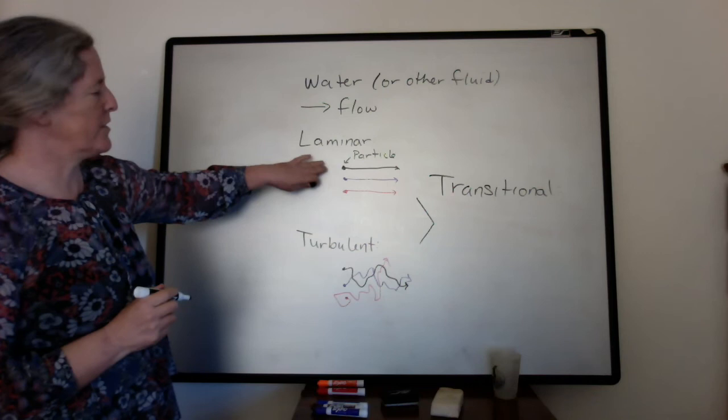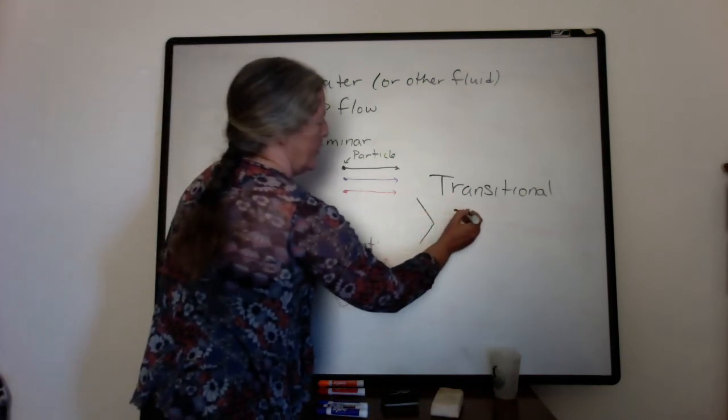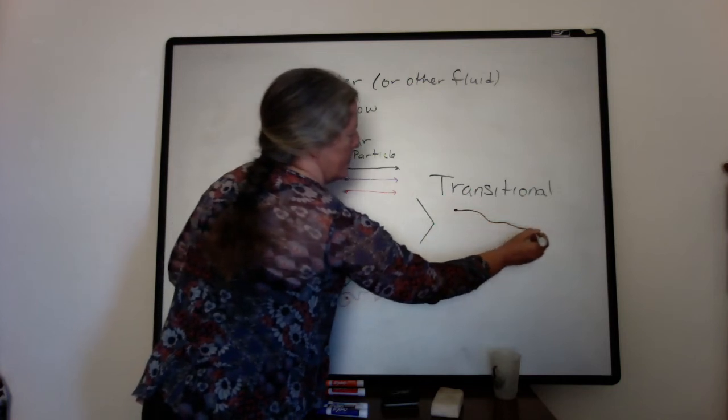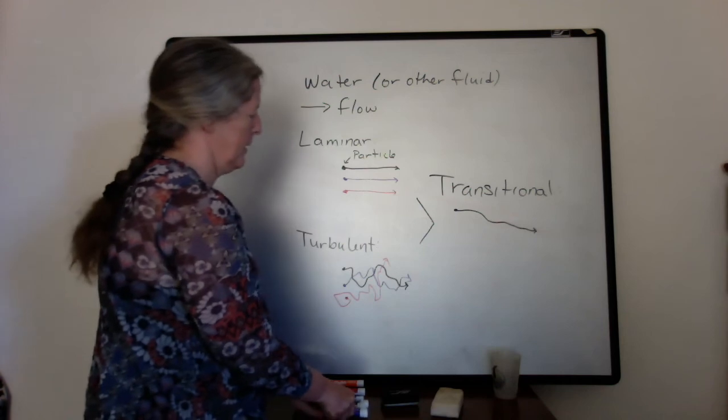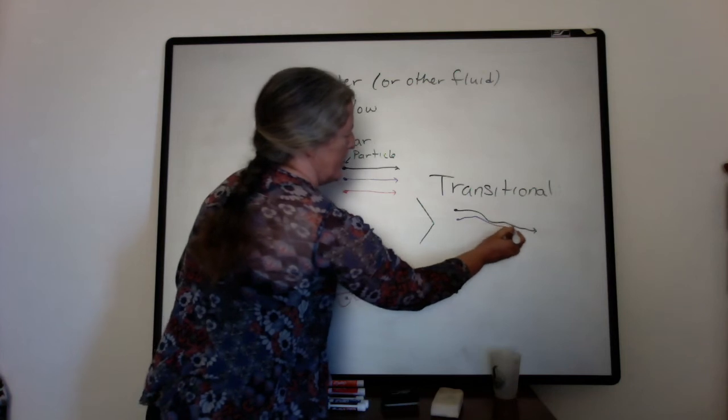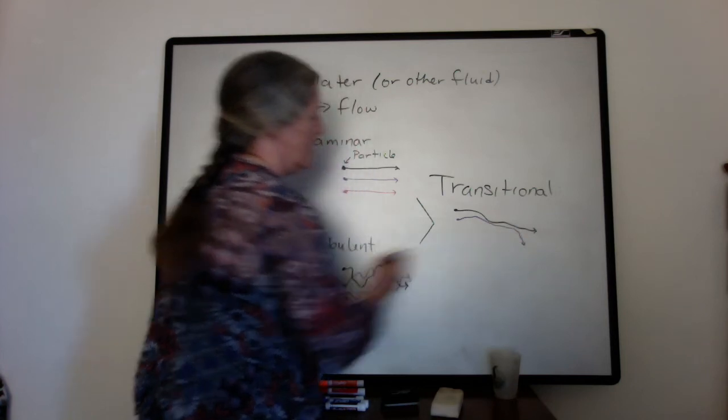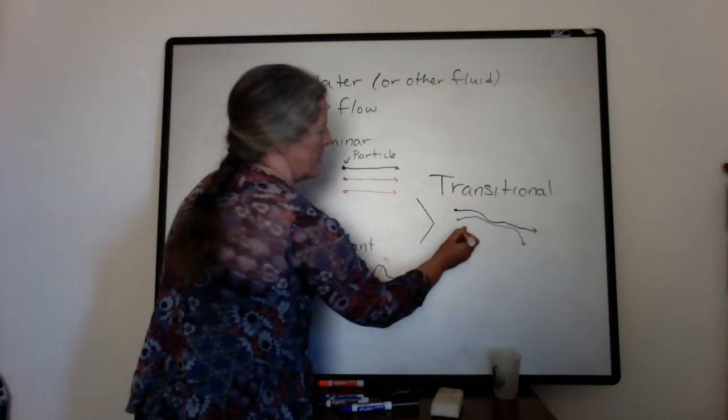If it's a transitional flow that's close to laminar flow, you might have your particle moving downstream, but not in a straight line. So the paths aren't exactly parallel, and there can be maybe a little bit of mixing.